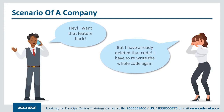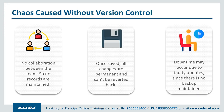What exactly is this version control system? Before I tell you, let me show you the chaos caused without it. Without the version control system, there was no collaboration between the team, no records maintained — nobody knew who made changes, where, or when. Once saved, all changes were permanent and could not be reverted back. And downtime also occurred due to faulty updates because there was no backup maintained; if the code crashed, the complete system would go down.